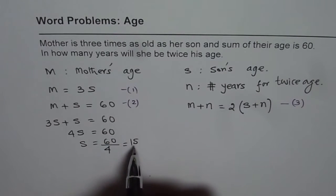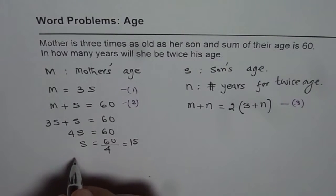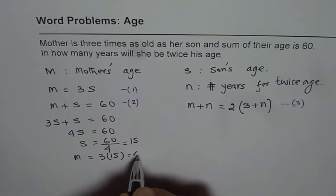Now if we know son's age, we also know mother's age, because mother's age is 3 times son's age. So mother's age is equal to 3 times 15, that is 45.